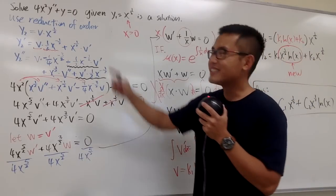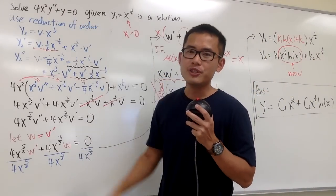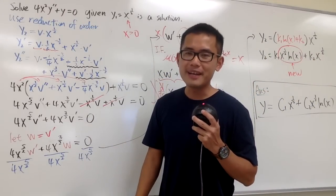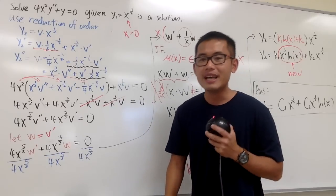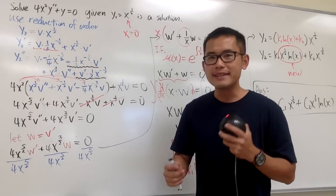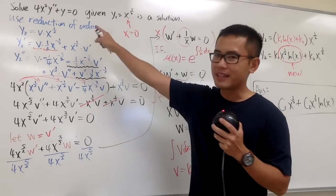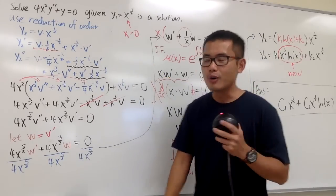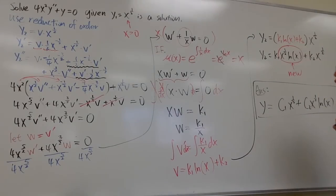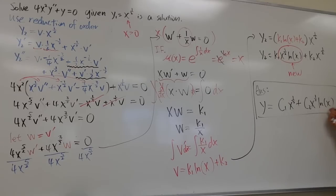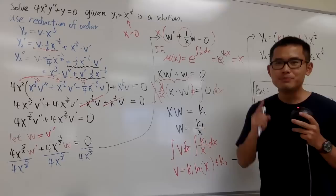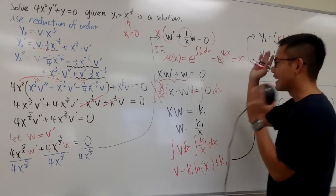This is the procedure using reduction of order to find the overall solution. As many of you noticed, this is in fact a Cauchy-Euler equation, so there is another approach. In my next video, I'll show how to find the characteristic equation for that differential equation, and also explain what happens when we end up with a repeated root — which leads to the multiplication by ln(x).